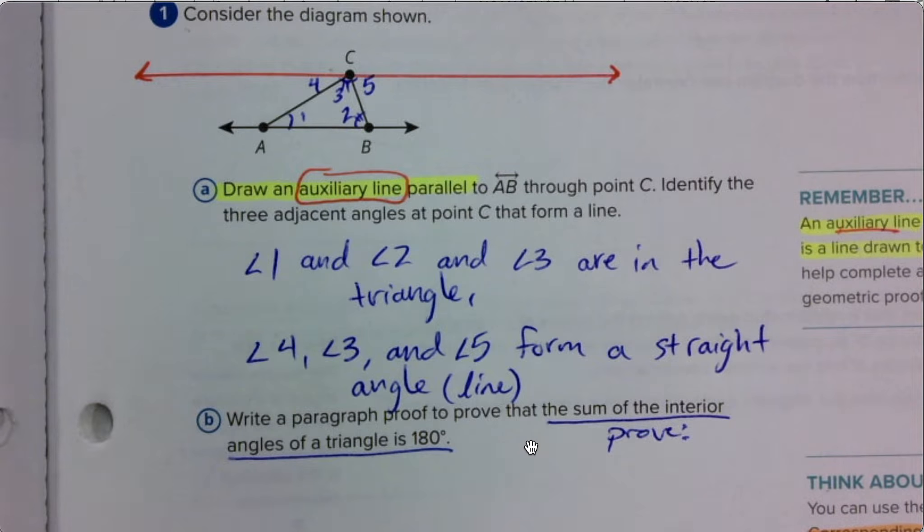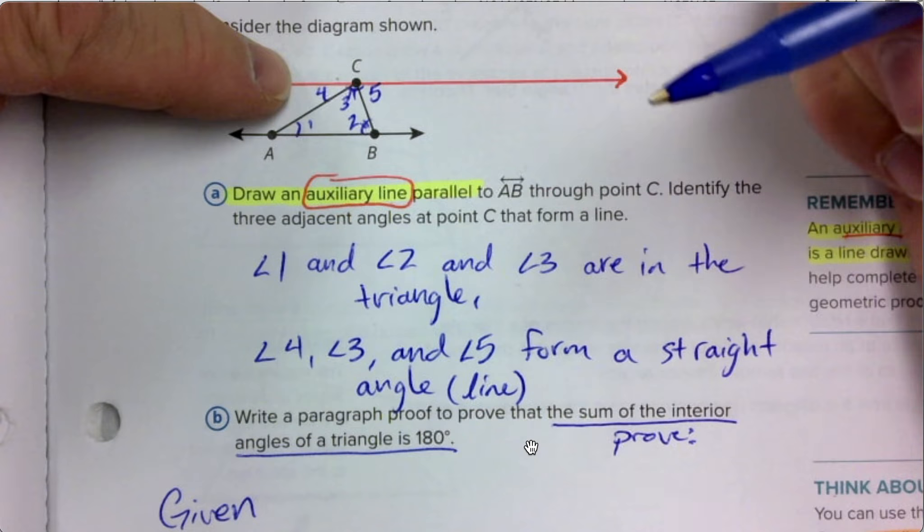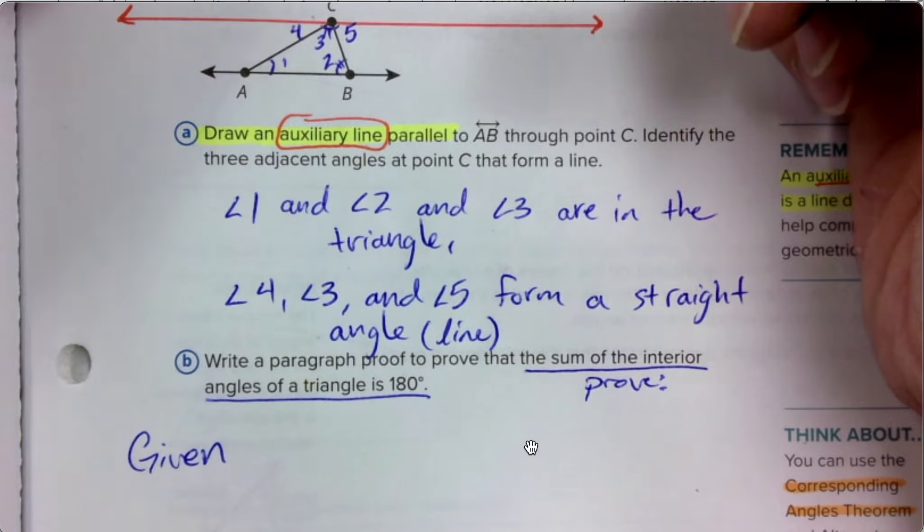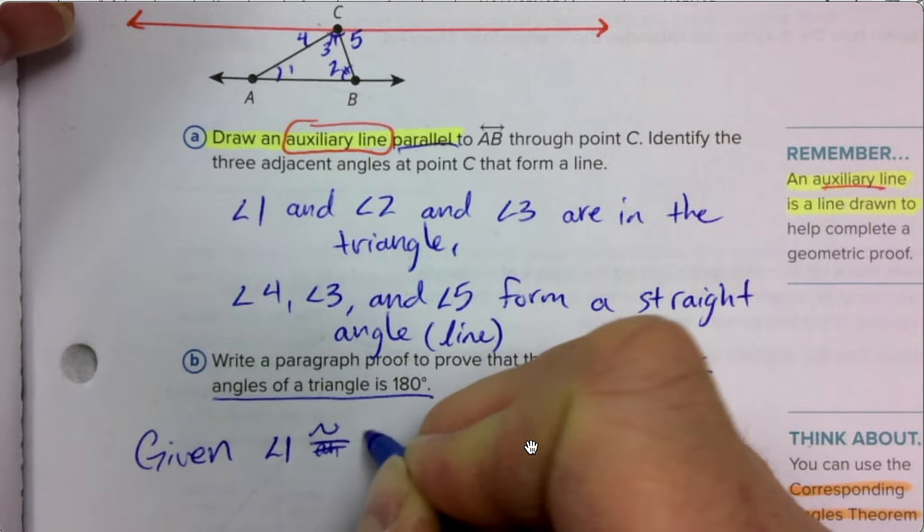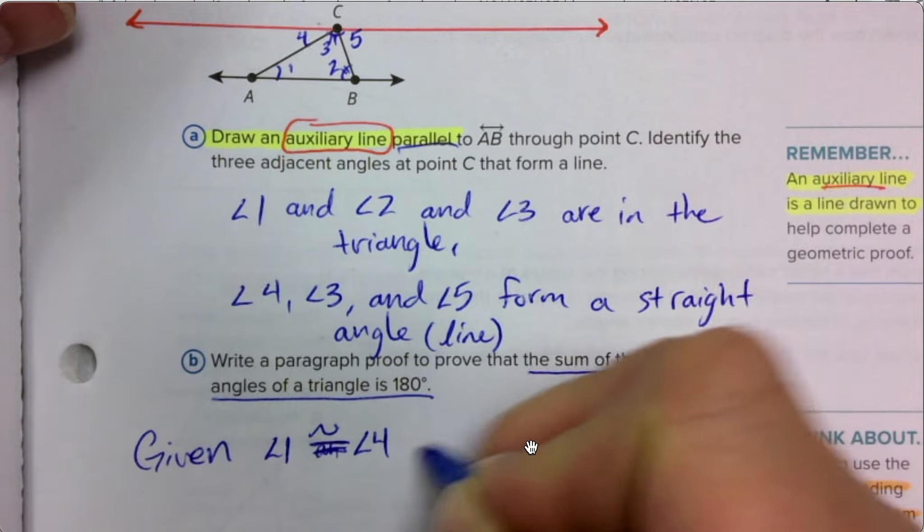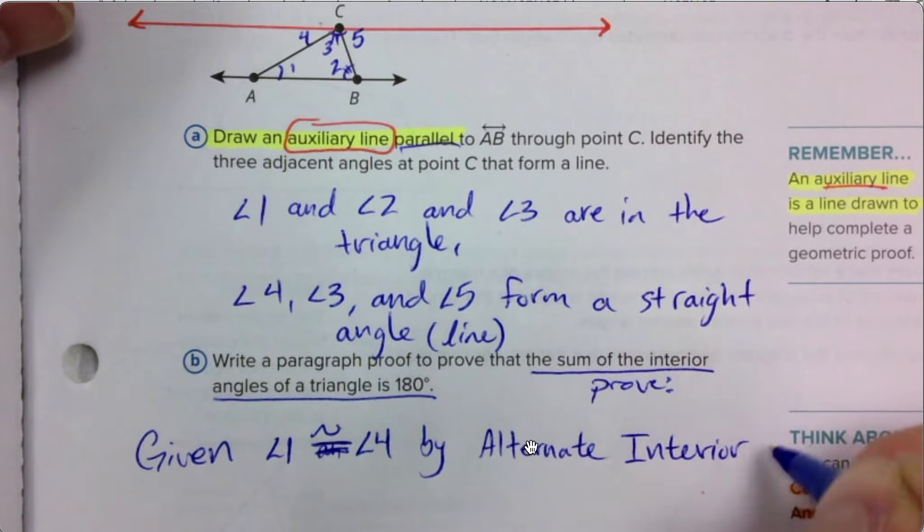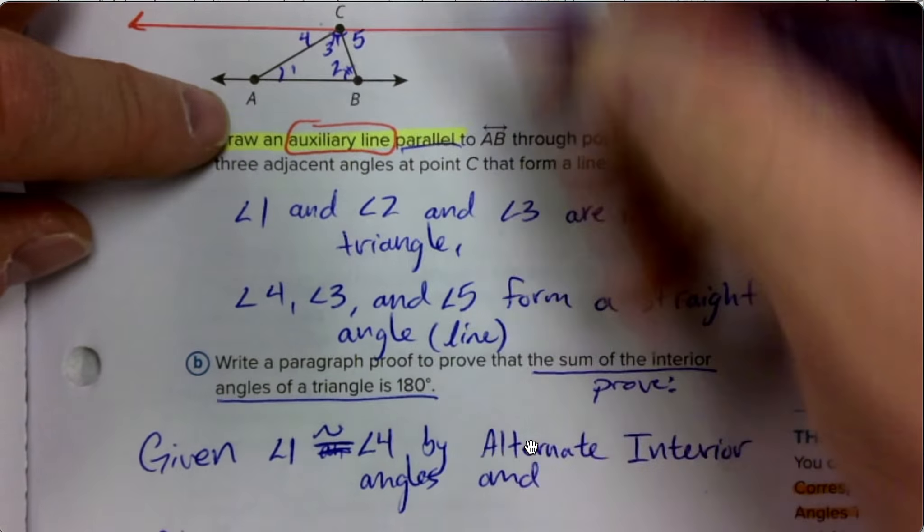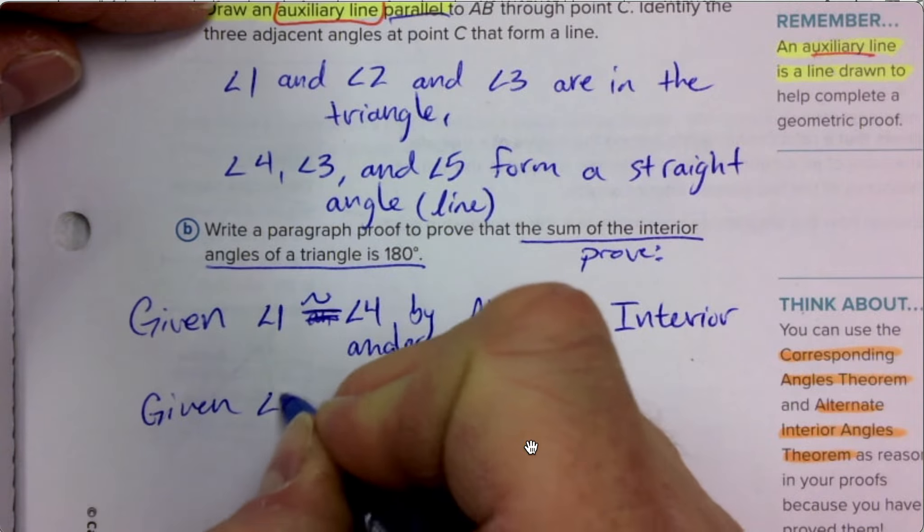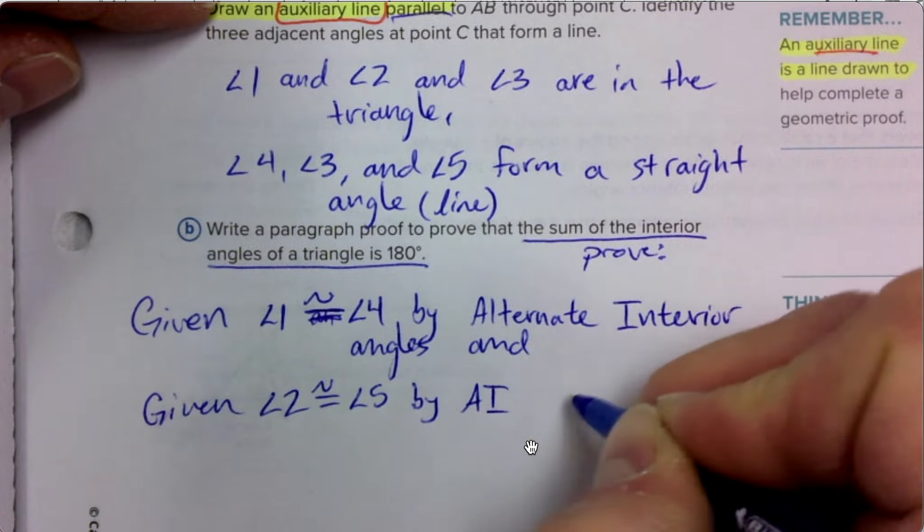In this diagram, we can say right away from the very beginning that angle four and angle one are alternate interior angles. We also have the idea of parallel. So given angle one is congruent to angle four by alternate interior angles.